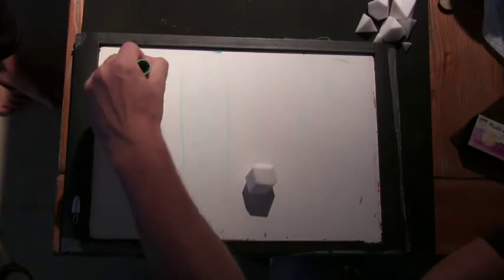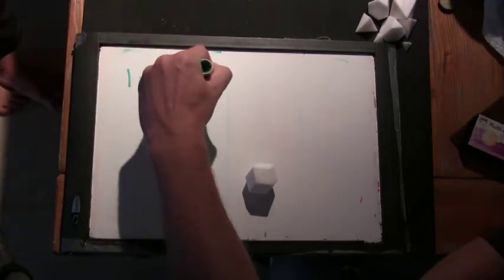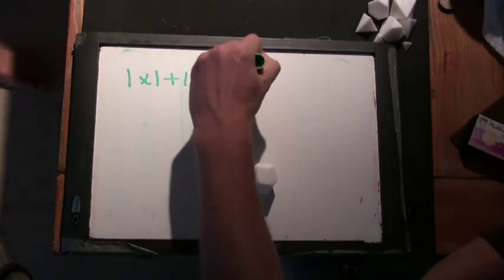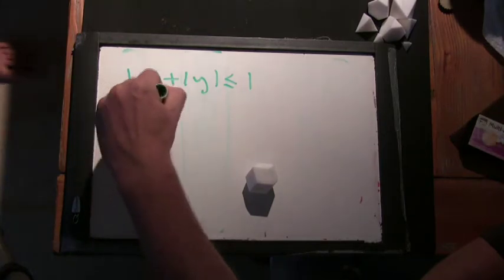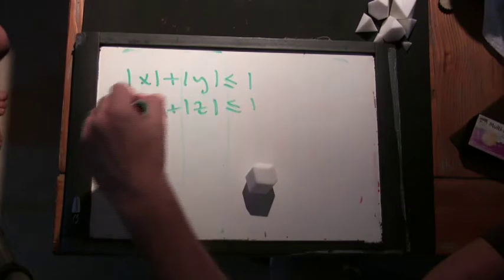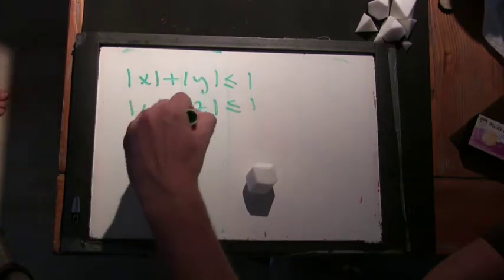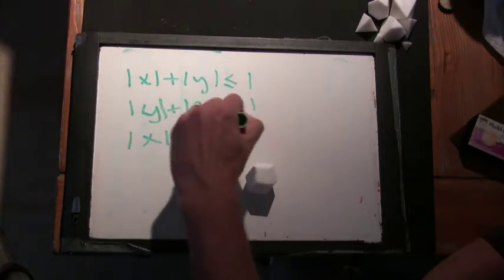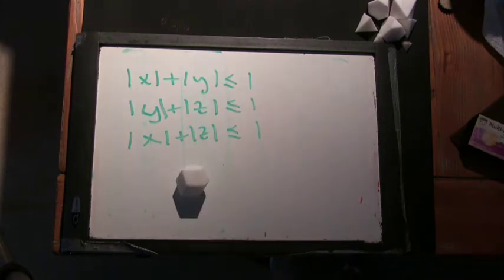A rhombic dodecahedron came from making these shapes. Absolute value of x plus y is less than or equal to 1. Absolute value of y plus z is less than or equal to 1. And absolute value of x plus absolute value of z is less than or equal to 1. So this is our three-dimensional shape.